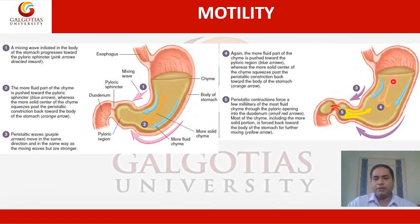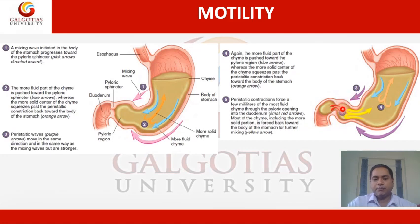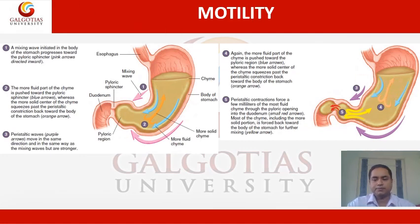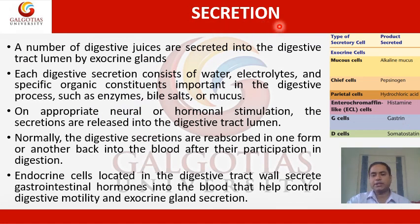The more fluid part of the chyme is pushed towards the pyloric region, whereas the more solid center squeezes past the peristaltic constriction back towards the body of the stomach. The peristaltic constriction forces a few millimeters of the most fluid chyme through the pyloric opening into the duodenum, while most of the chyme — including the more solid portion — is forced back towards the body of the stomach for further mixing.